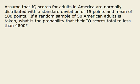We are assuming that IQ scores for adults in America are normally distributed with a standard deviation of 15 and a mean of 100. So right away we are given that sigma is equal to 15 and mu is equal to 100.